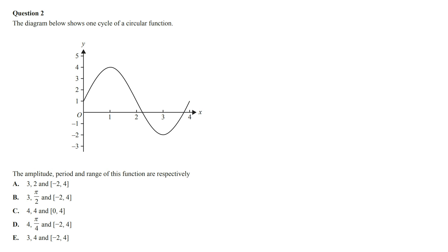The diagram below shows one cycle of a circular function. The amplitude, period and range of this function are respectively. The graph shown is either a sine or a cosine function. The amplitude is the distance from the center line, also known as the mean position, to its maximum or minimum point.